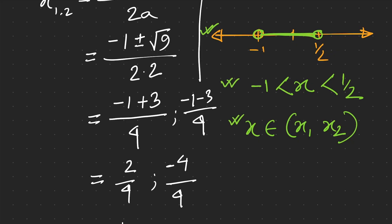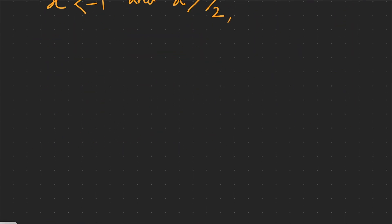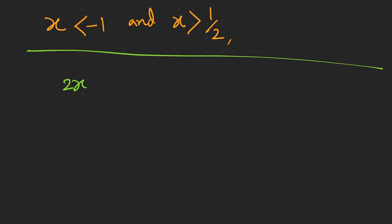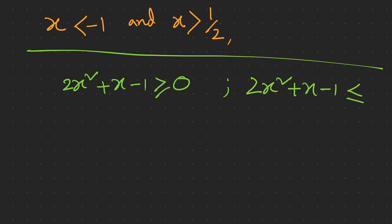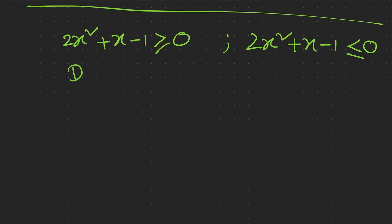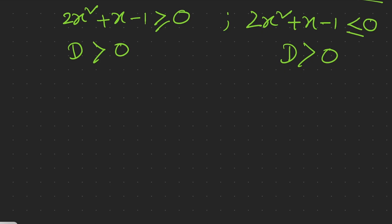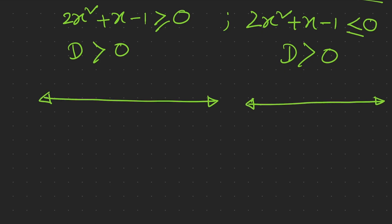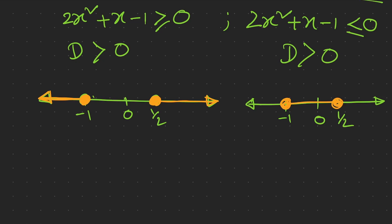Whenever I teach inequalities I always explain the solution in three different ways, because in the exam you can encounter any of them. Now, what if the expression was 2x² + x − 1 ≥ 0, or 2x² + x − 1 ≤ 0? In this scenario, D > 0 still holds. The only difference in the solution is that now x₁ and x₂ are included, so we fill the circles on the number line.